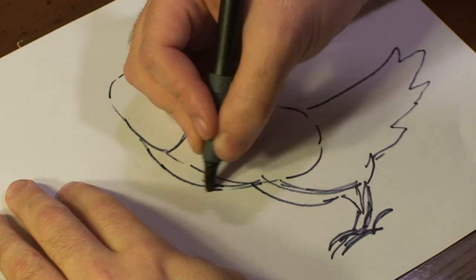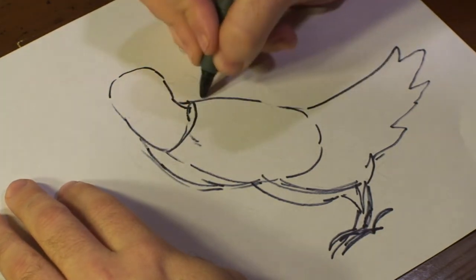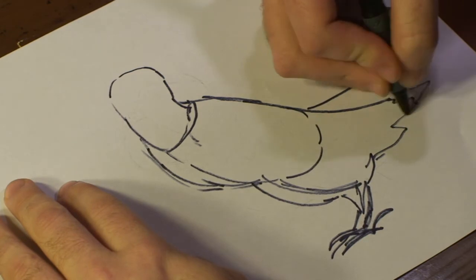legs, bring out his chest a bit more, like so, and we've got the basic build. Add a wing here.